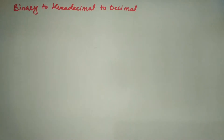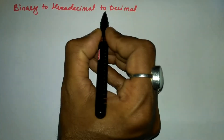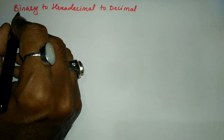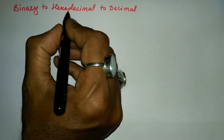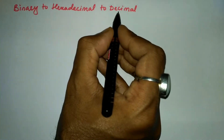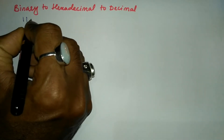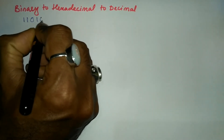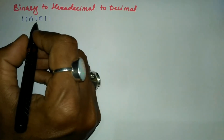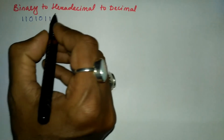Hello and welcome to Vision Academy. In this video we are going to convert binary to hexadecimal and to decimal. Let us take one example — I'll write the binary number 1101011.